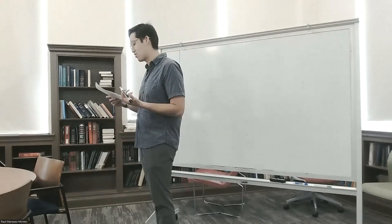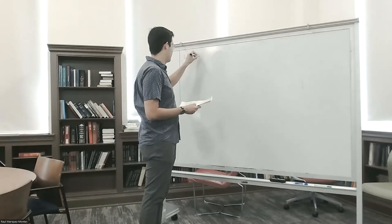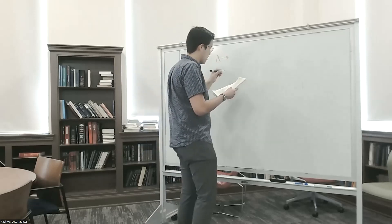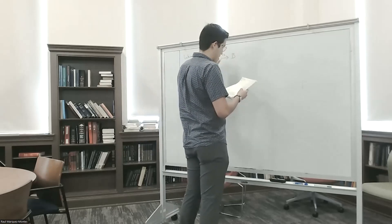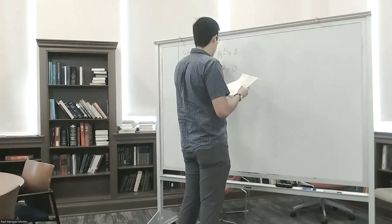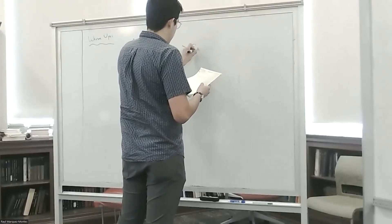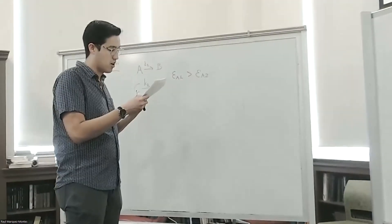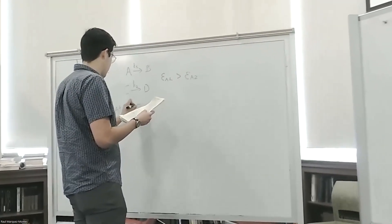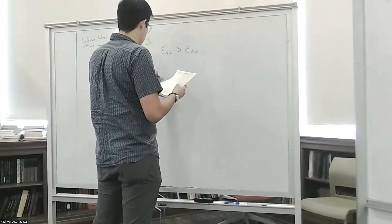I want to start with a warm-up question. So if we have two elementary reactions — A going to B with rate constant k₁, and another parallel reaction of C going to D with rate constant k₂ — and the activation energy of reaction one is greater than the activation energy of reaction two, the question is: at high temperatures, which reaction will proceed more quickly, one or two?